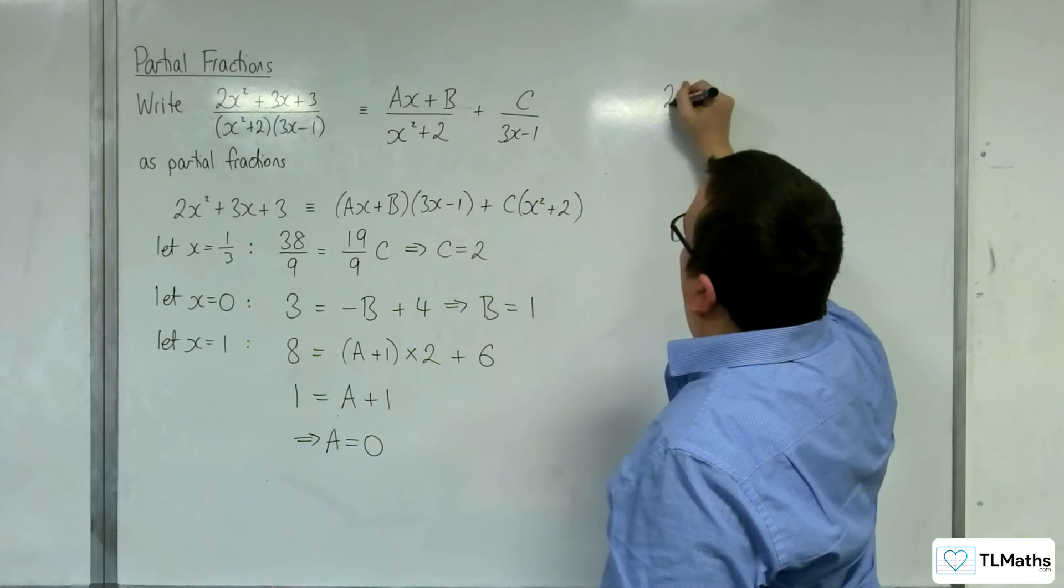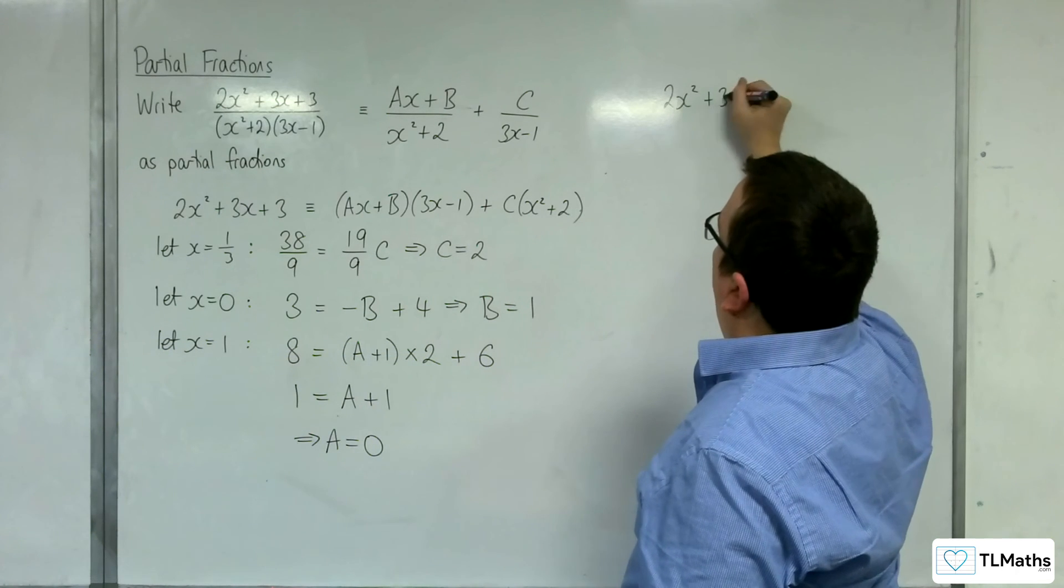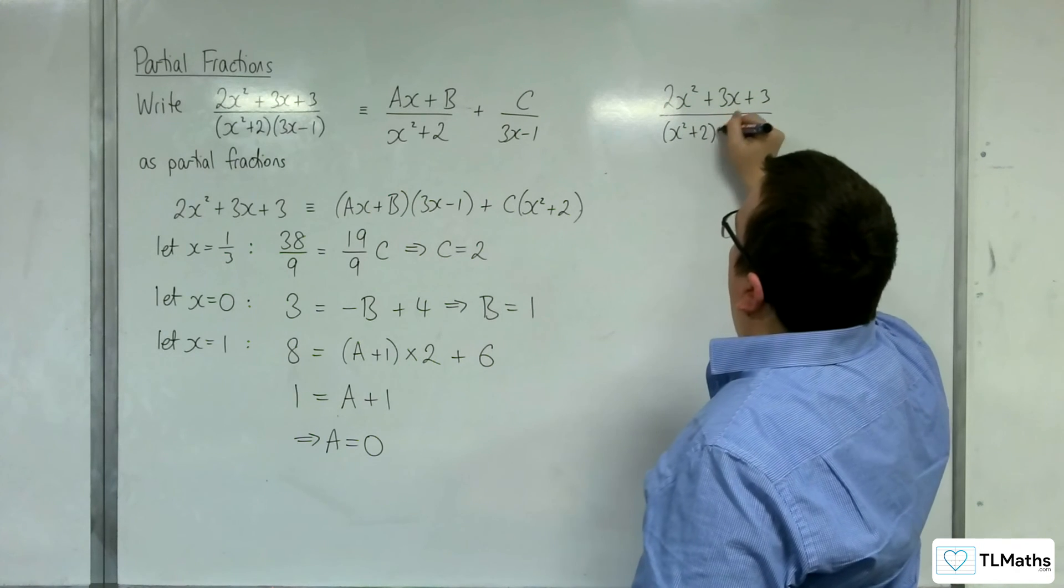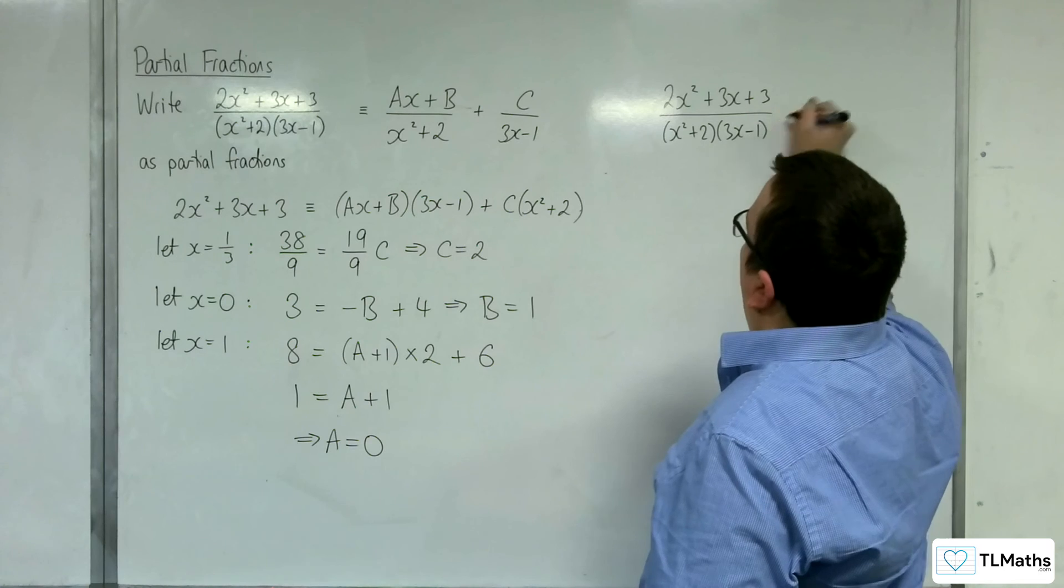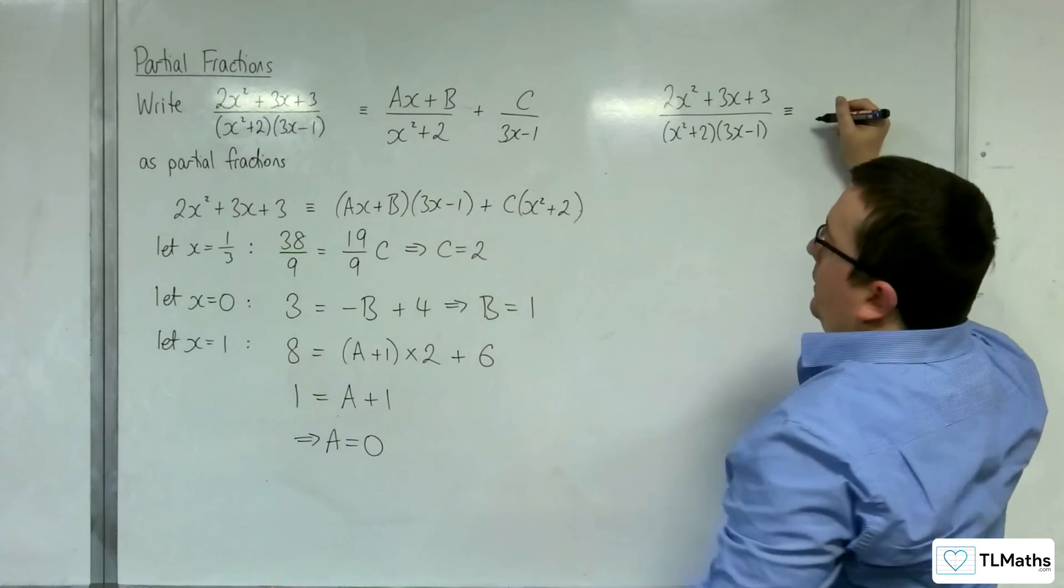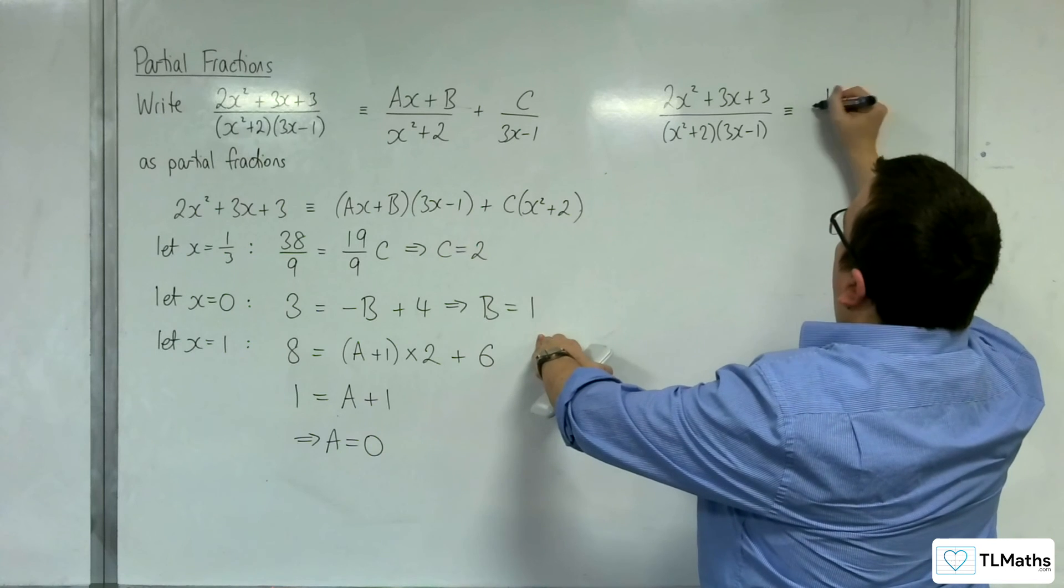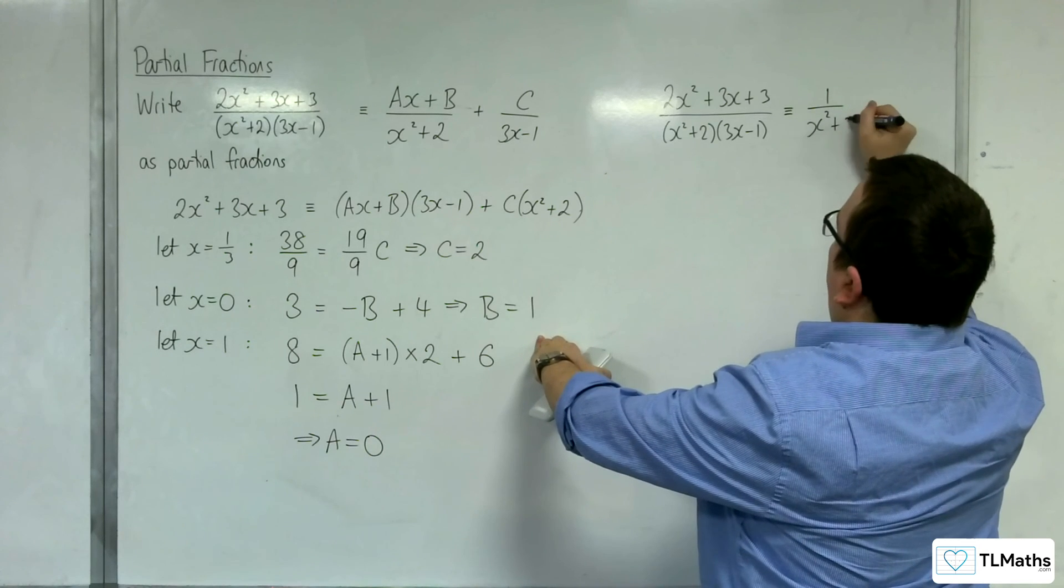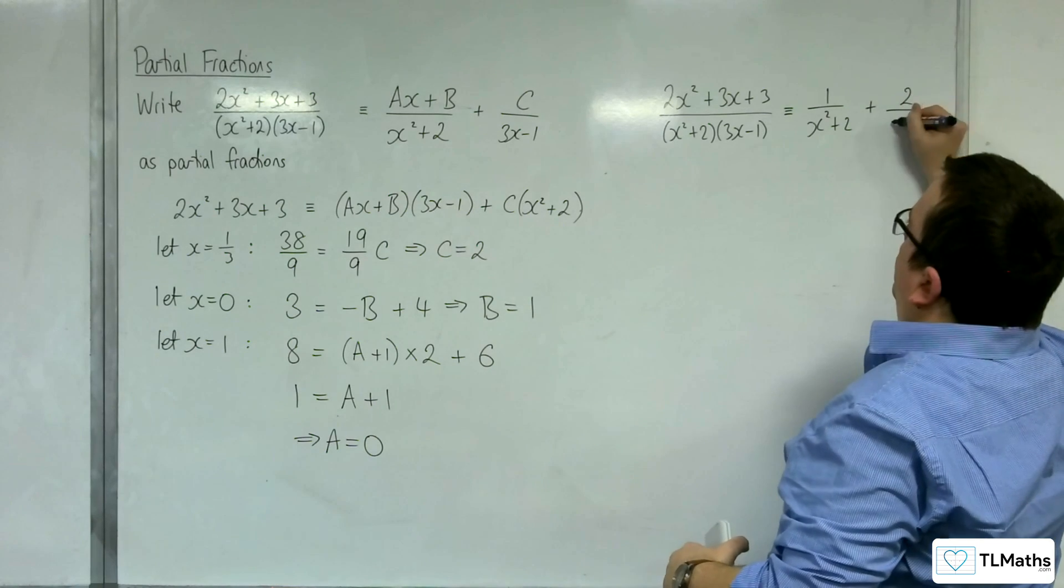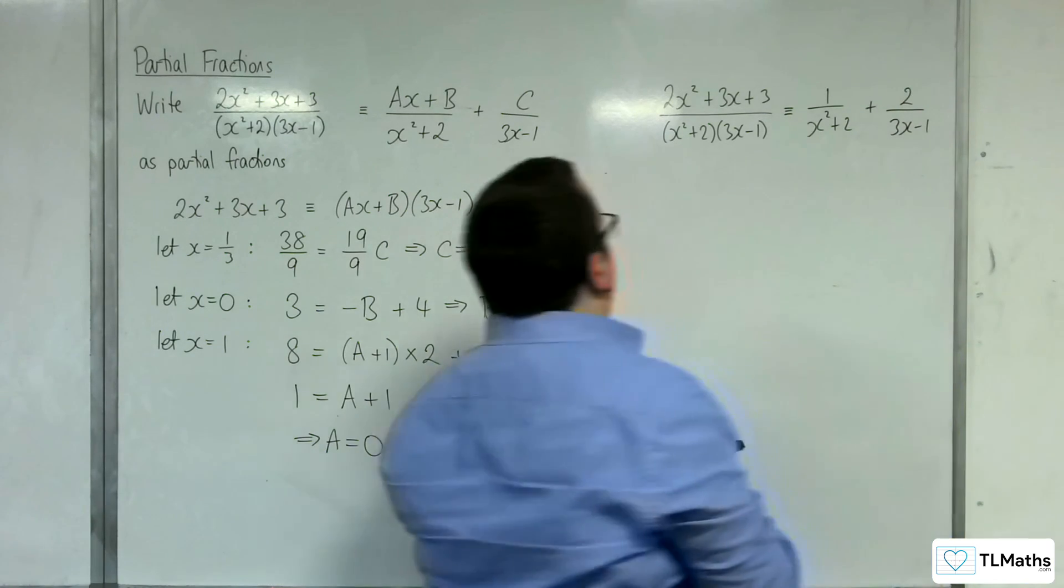So 2x squared plus 3x plus 3 over x squared plus 2, 3x minus 1 is equivalent to 0 times x. So it's just the beta. So 1 over x squared plus 2, plus 2 over 3x minus 1. So that's how we can write this fraction in partial fractions.